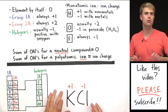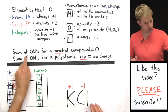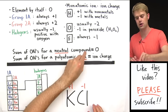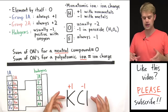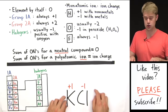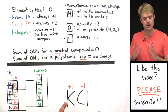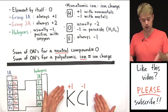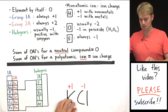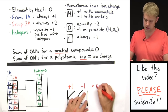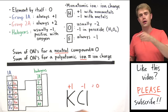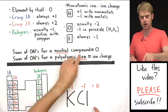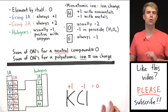Now I want to use this to show you a third rule: the sum of oxidation numbers for a neutral compound equals zero. KCl is a neutral compound — it doesn't have a charge after it. So the sum of these oxidation numbers is going to equal zero. And that's definitely true here: plus one, minus one, equals zero. The sum of oxidation numbers for a neutral compound should always equal zero.